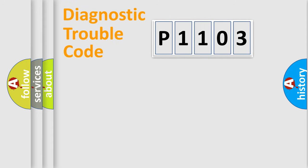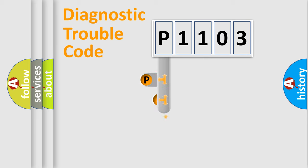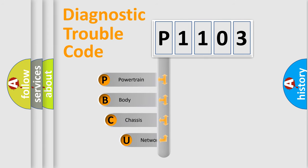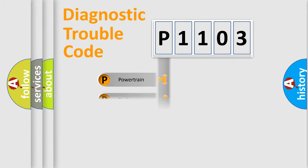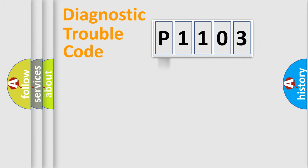Let's do this. First, let's look at the history of diagnostic fault code composition according to the OBD2 protocol, which is unified for all automakers since 2000. We divide the electric system of the automobile into four basic units: Powertrain, Body, Chassis, and Network. This distribution is defined in the first character of the code.